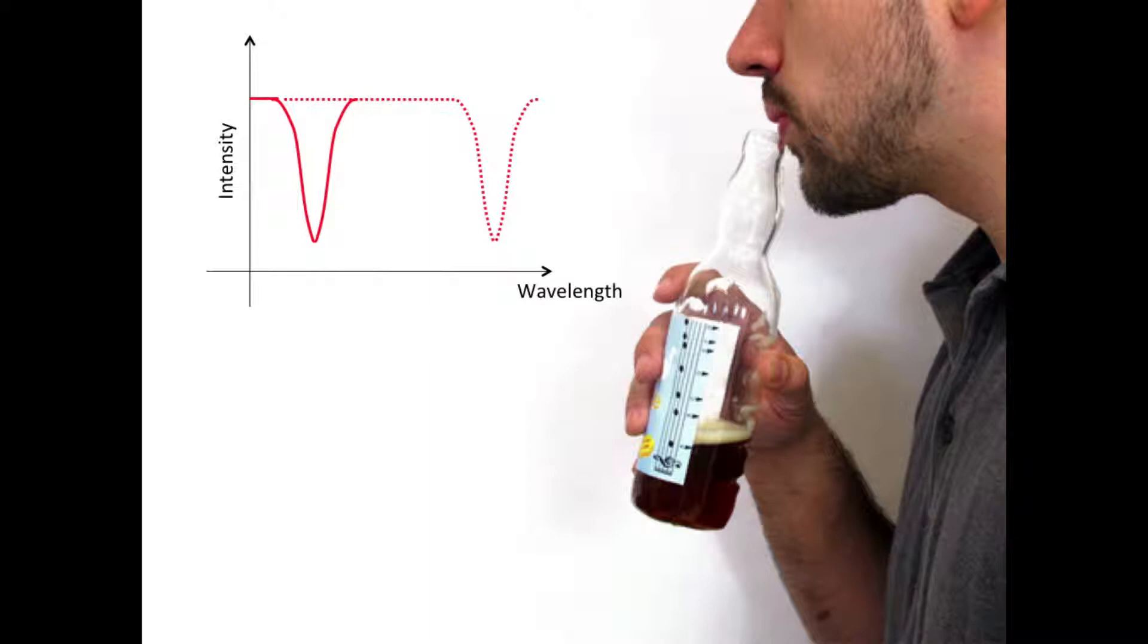When you blow into a glass bottle with some liquid in it, it resonates and creates a musical note. The amount of liquid in the bottle changes the resonant wavelength of the bottle the same way the addition of a protein particle changes the sphere's resonant wavelength.